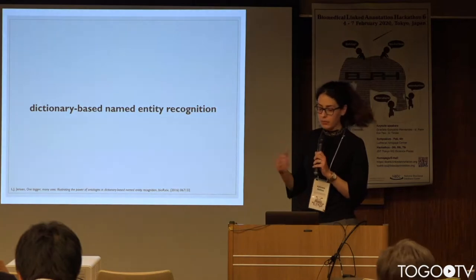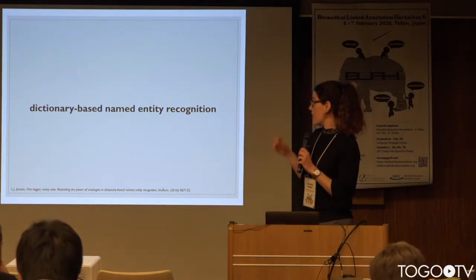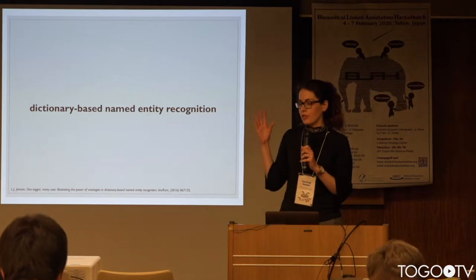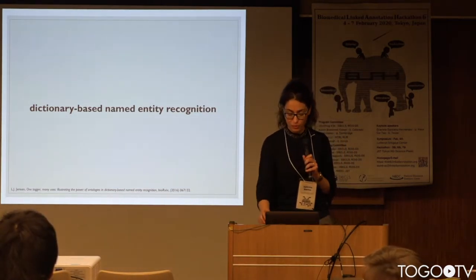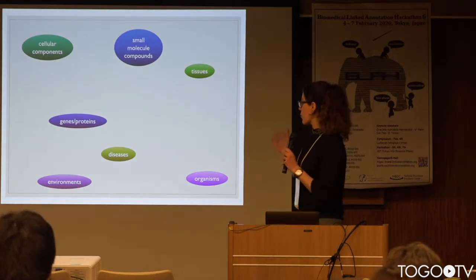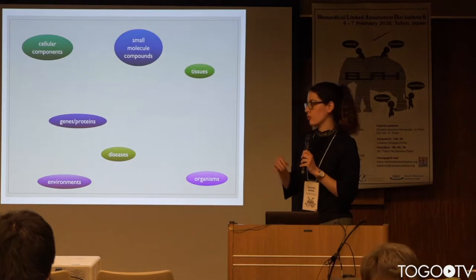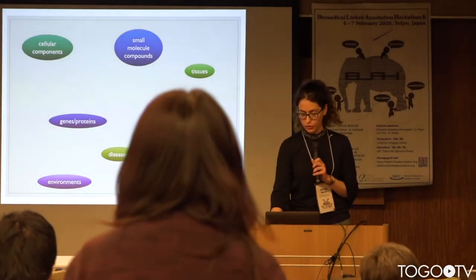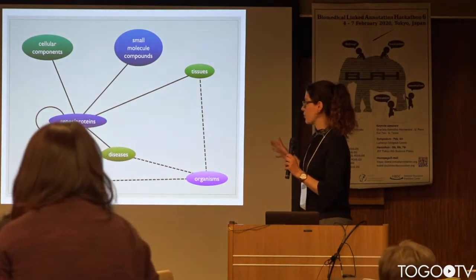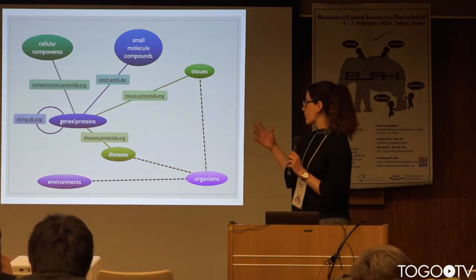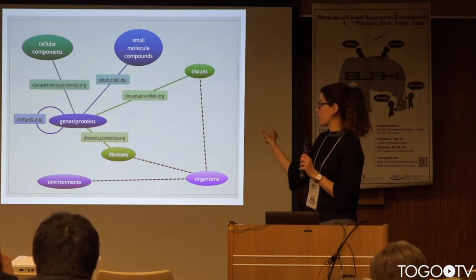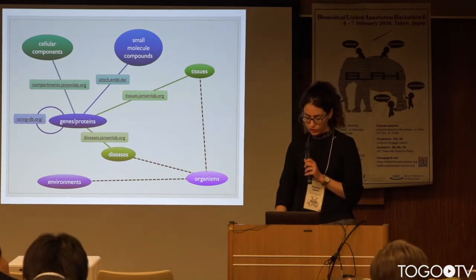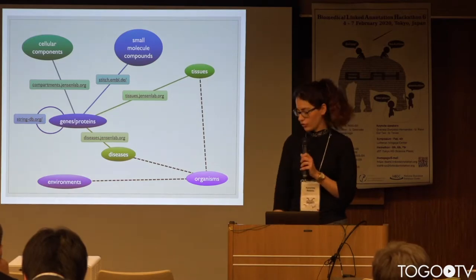In previous years our lab has developed a tagging engine that serves as the core of a dictionary-based named entity recognition system. This system is used to solve a lot of biomedical problems and in combination with several dictionaries it can identify specific entities like cellular components, genes, proteins, and other entities shown here, find relationships between those entities, and turn them into specific identifiers from dedicated databases that are available through many resources like the ones in this network.